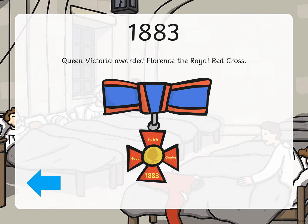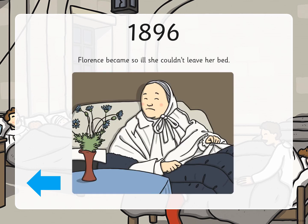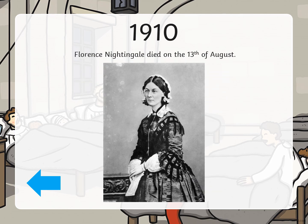In 1883, Queen Victoria, the Queen of England, awarded Florence the Royal Red Cross. In 1896, when Florence was 76 years old, she became so ill and sick she couldn't leave her bed. Then in 1910, when she was 90, Florence Nightingale died on the 13th of August. This picture is a real painting of Florence Nightingale.